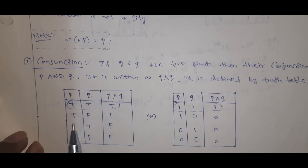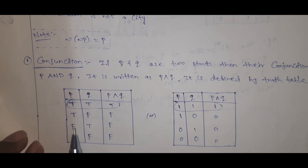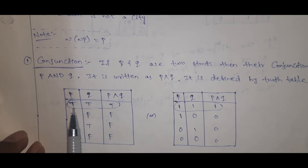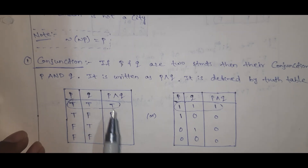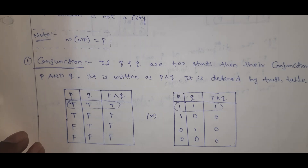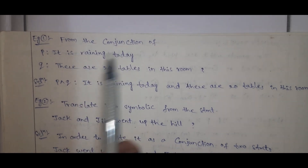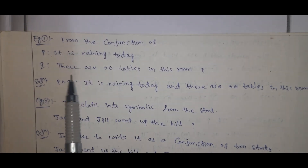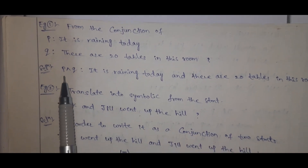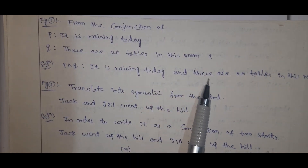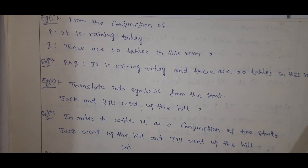It is defined by the truth table. With two propositions, we have four rows: T-T, T-F, F-T, F-F for P and Q. The conjunction P∧Q is true only when both statements are true; all remaining combinations are false. Example: 'It is raining today' AND 'there are 20 tables in this room.'